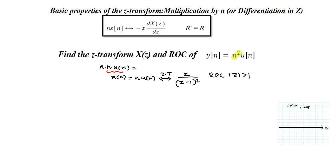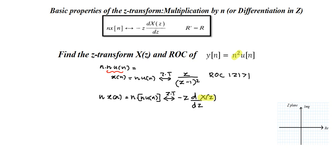Now our signal is n·x[n], that is n·(n·u[n]). The Z-transform of this signal we write as minus z · d/dz of X(z). In this case X(z) = z/(z−1)² because we are considering x[n] = n·u[n]. From the previous question we got that result. So now we write: minus z · d/dz of z/(z−1)².